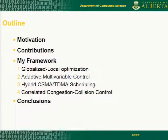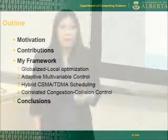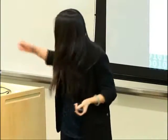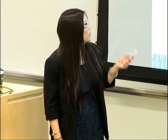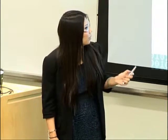In this talk, I will first motivate this research and summarize our contributions. After that, I will present the proposed framework in four parts. The first mechanism aims to find the optimal fair share of resources via globalized local optimization. The second mechanism aims to improve resource utilization efficiency via adaptive multi-variable control. The third and fourth mechanisms handle the challenges in multi-hop scenarios, specifically intra-path and inter-path interference, as well as correlated congestion and collisions. At the end, I will conclude by pointing out our future directions.